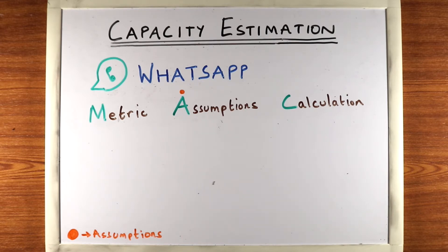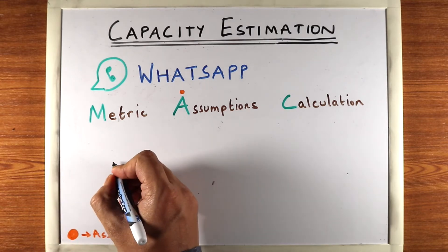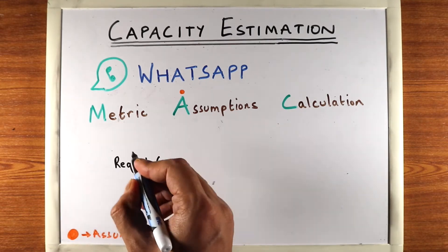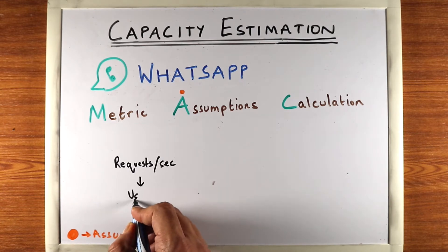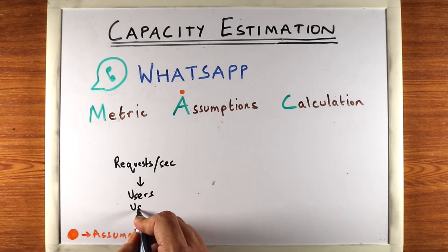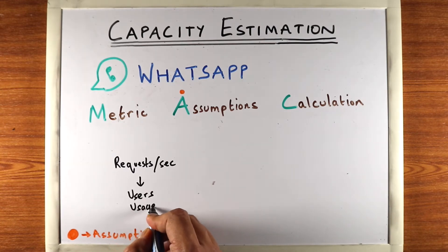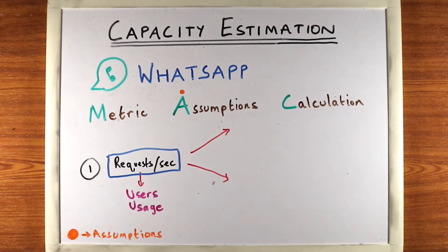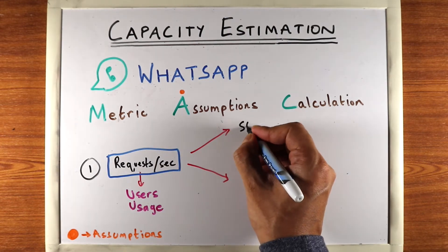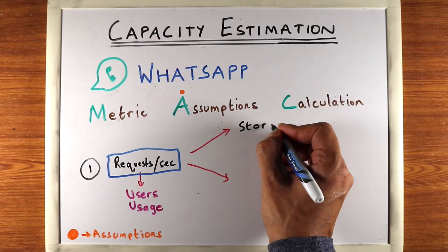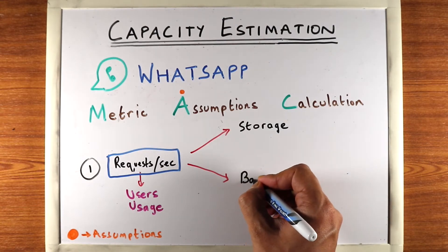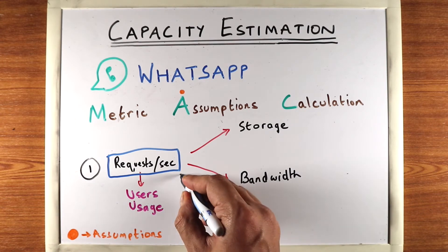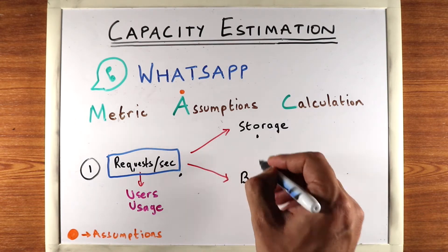So generally for capacity estimations, here's a good way to start. You can start off by estimating the requests per second, which is really a product of the number of users and the amount of usage that each user has. Once you've calculated this, you can calculate two things pretty easily: the first is the storage required, and the second is the bandwidth needed. Usually the interviewer won't expect you to calculate more than these three metrics.